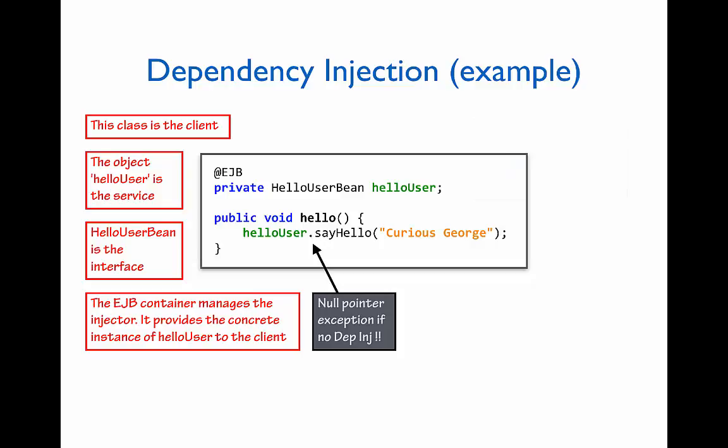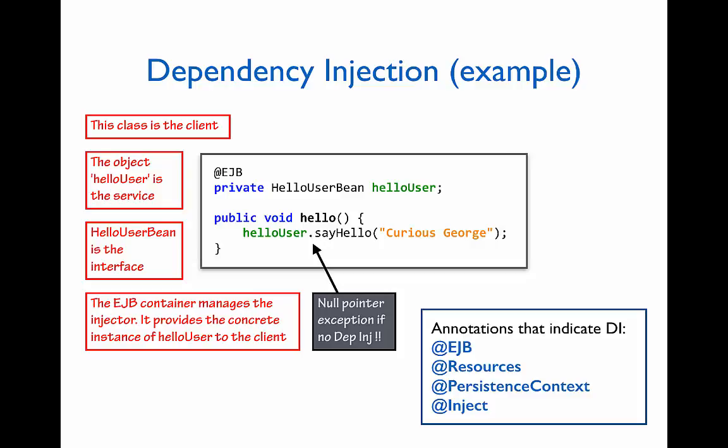When you see annotations such as @EJB, @Resources, @PersistenceContext, or @Inject on variable declarations, it typically indicates that the implementations of those objects will be injected by the container rather than created in the current class.